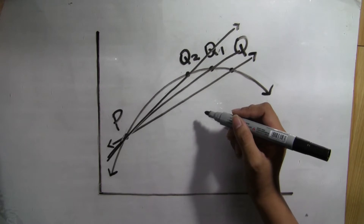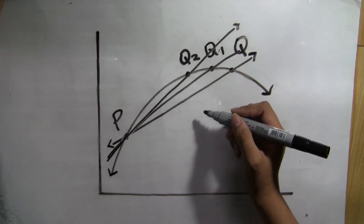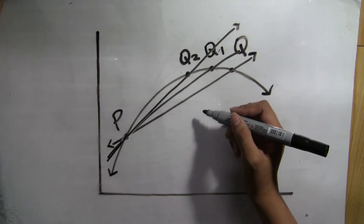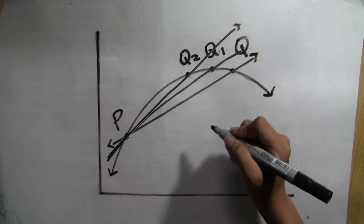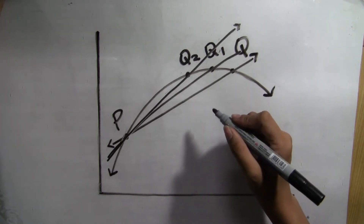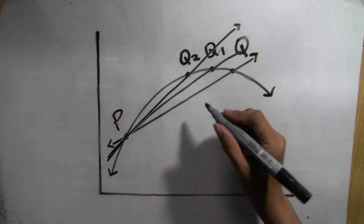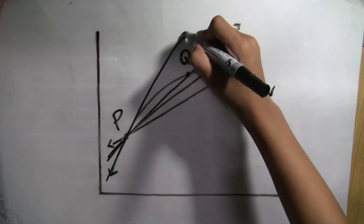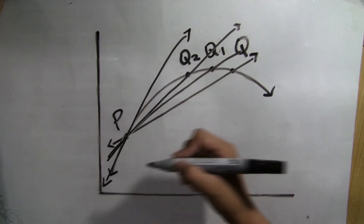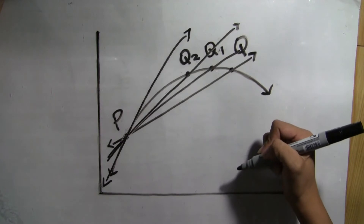Intuitively, we can define the tangent line through P to be the limiting position of the secant lines PQ as the point Q approaches P. If the sequence of secant lines through the graph of Y equals F of X through P approaches one limiting position, then we define this line to be the tangent line through Y equals F of X at P.